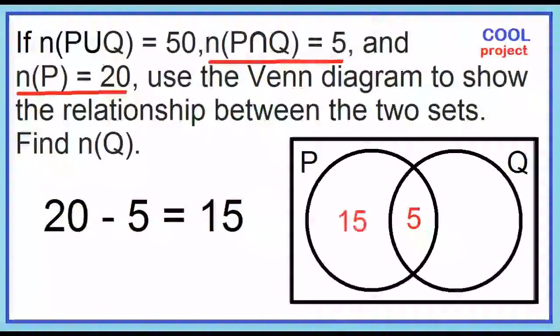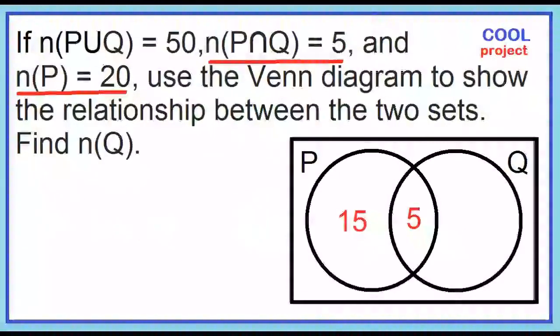Place 15 in circle P. Note that circle P has 20 number of elements. 15 plus 5 is 20.